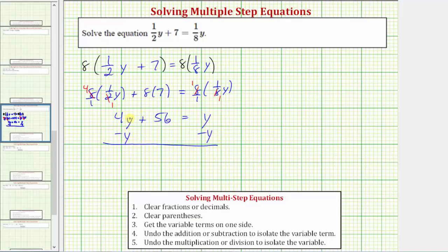Simplifying, we have 4y - y, or if we want 4y - 1y, which is 3y, plus 56 equals y - y is 0. So now we have the equation 3y + 56 = 0.